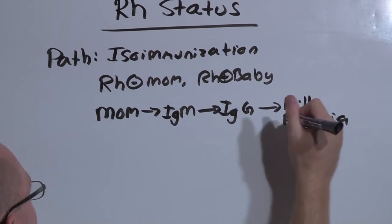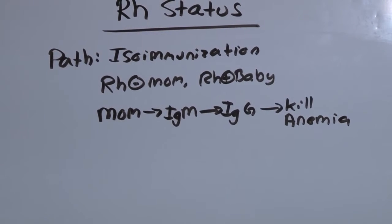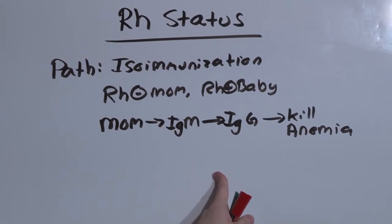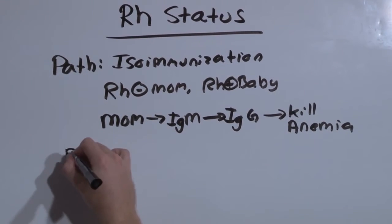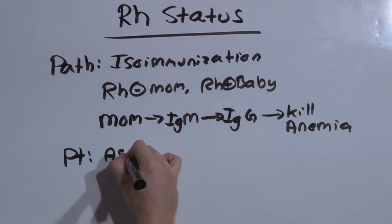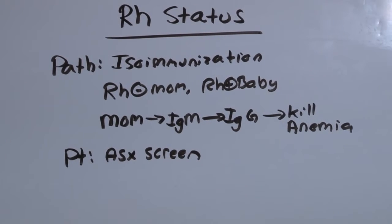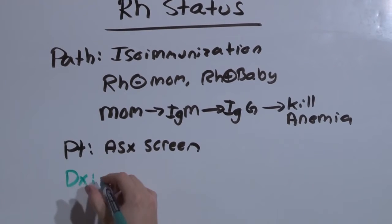So the goal with screening for RH status is to prevent mom from ever developing antibodies in the first place. You're going to screen everybody.